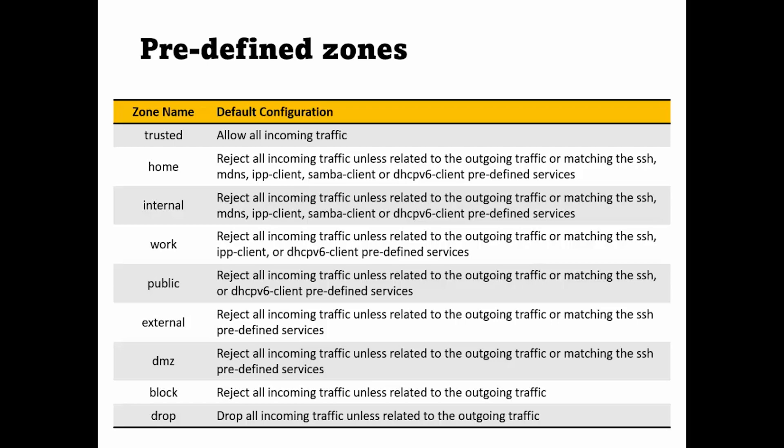In a public zone you might want to restrict certain services. For example, at home or at work it is safe to allow outside traffic to access your SSHD service because it might be a friend, colleague, or yourself wanting to log into your system. But it will not be safe to allow access to the SSHD service in a public zone or a network you are not sure is safe. You can set up particular zones for valid ports or services, as some services are allowed in certain zones but not others. Firewall D will check whether the incoming traffic falls into one of the zones and apply the rules of that zone.